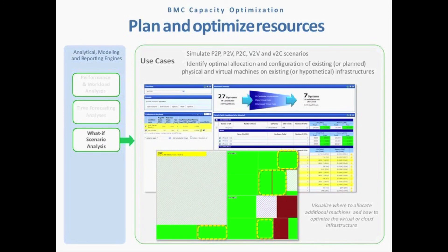And then lastly, planning and optimization. Virtualization planning, cloud planning — that is the bread and butter of capacity management. Understanding what you can consolidate — physical to virtual, physical to cloud — where should applications reside, which applications should coexist, which shouldn't. These are the types of what-if analyses that can be done with capacity optimization. You can add different policies and constraints that guide the algorithms and recommendations that BCO provides — using business, technical, and compliance constraints, such as disaster recovery systems that can't coexist with other applications.